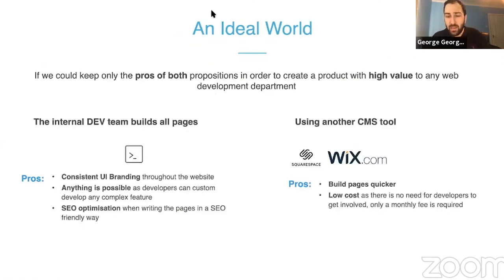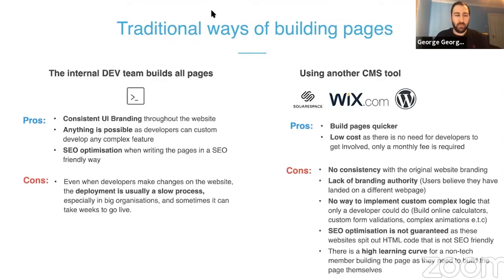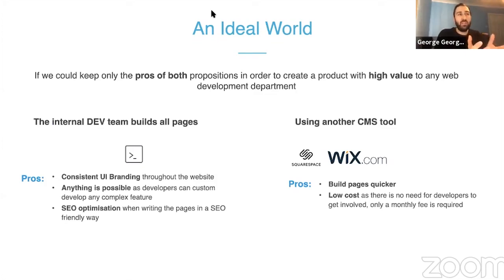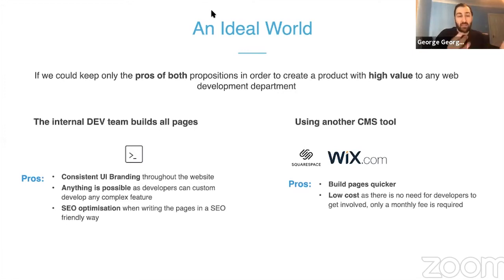In an ideal world, we remove all the cons and keep all the pros. Pages will be built quicker at lower cost because technical people only build the UI components, and non-technical people can also change the content. We have consistent UI branding, anything is possible because you build everything in React, SEO optimization is maintained, and you no longer have the slow deployment process.